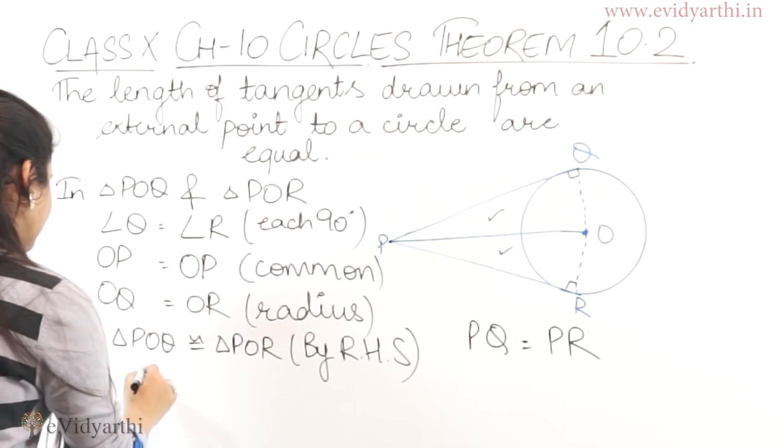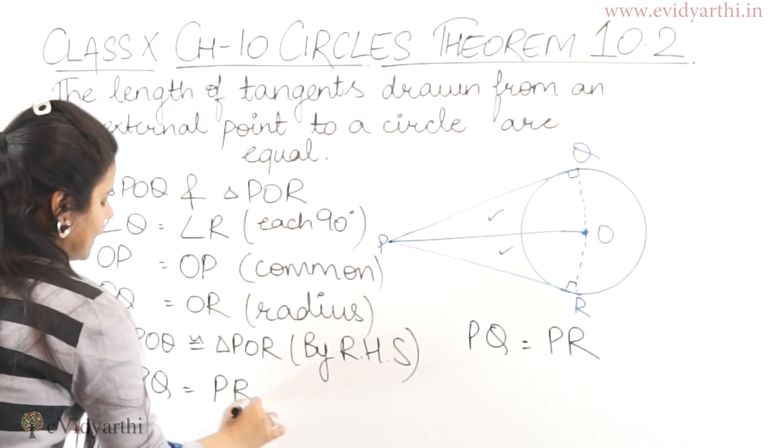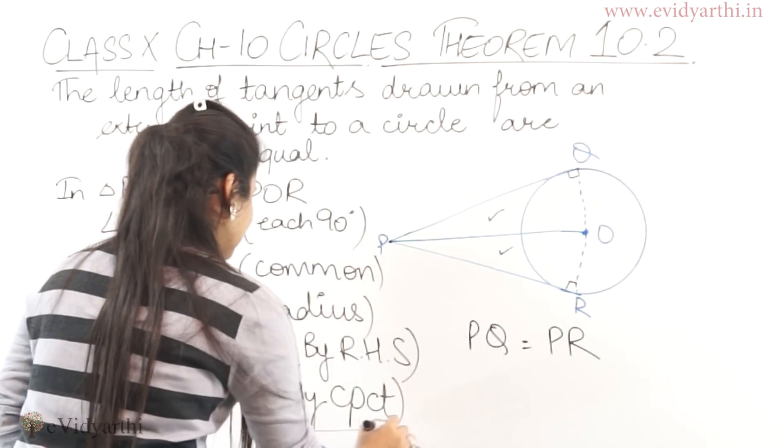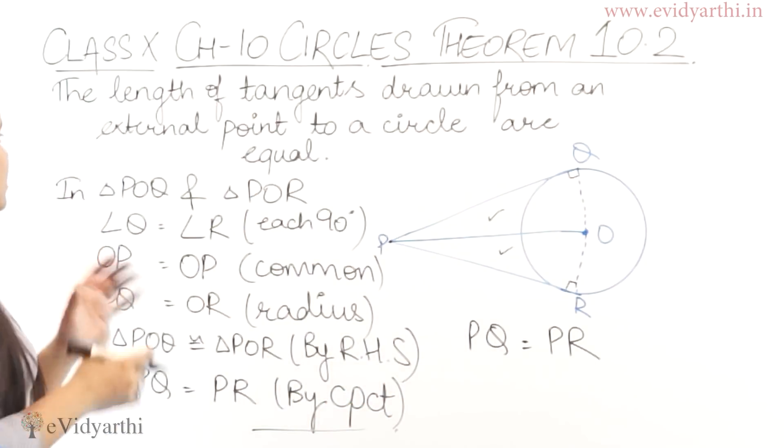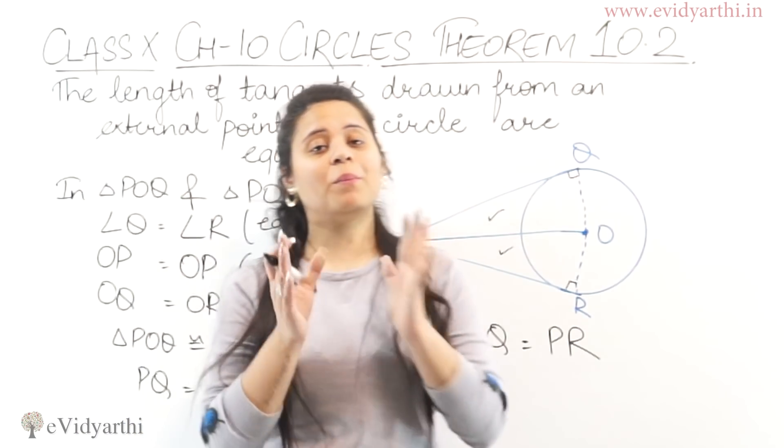And if these two triangles are congruent, so we can say PQ is equal to PR by CPCT. That is corresponding parts of congruent triangles. So this was Theorem number 10.2. This is an important theorem and its proof is also very simple.